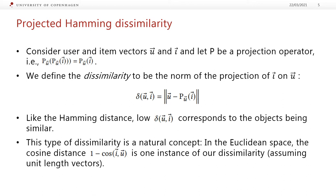What we propose is called the projected Hamming dissimilarity. In this setting, consider some user and item vectors u and i, and let p be a projection operator. We then define the dissimilarity to be the norm of the projection of i and u. Similarly to the Hamming distance, a low dissimilarity corresponds to the objects being similar. Even though this notion of dissimilarity looks a bit unusual, it's actually completely natural. In the Euclidean space, the cosine distance, which is 1 minus the cosine between the vectors, is actually one instance of our dissimilarity assuming we have unit vectors.